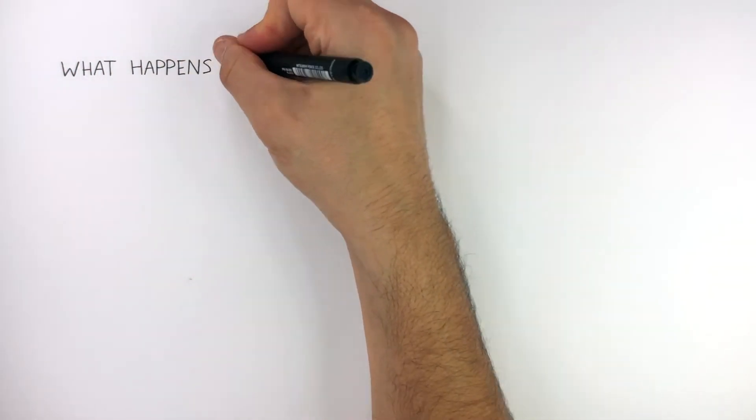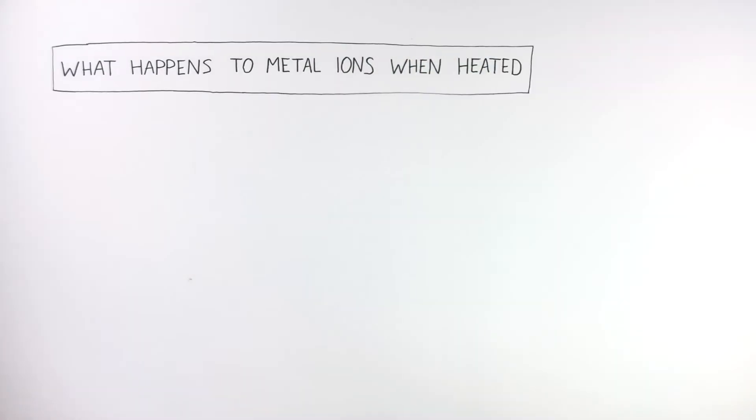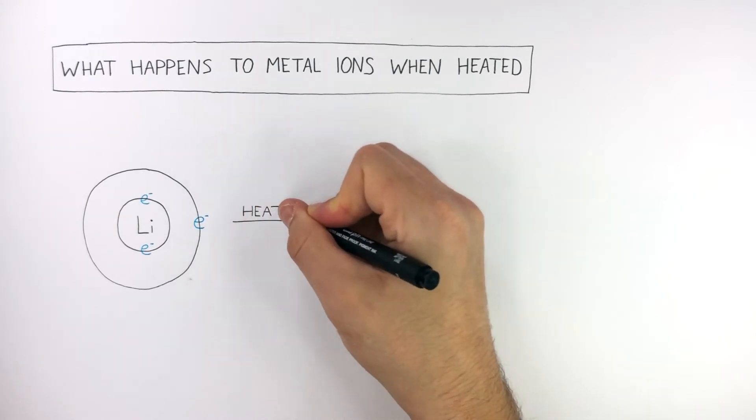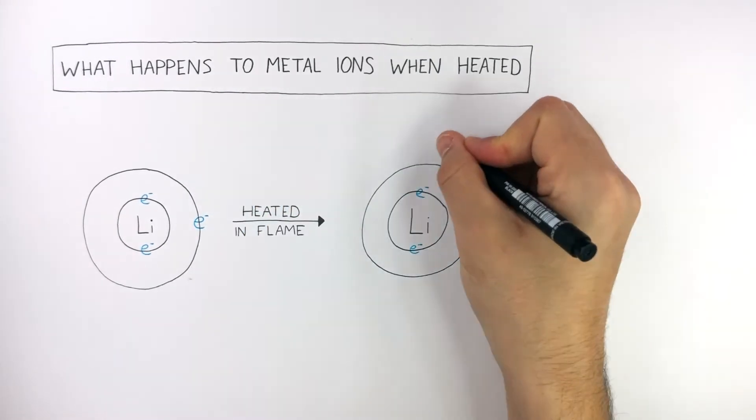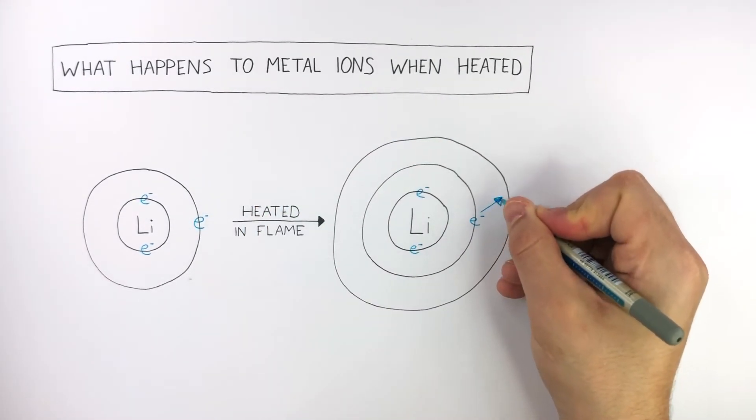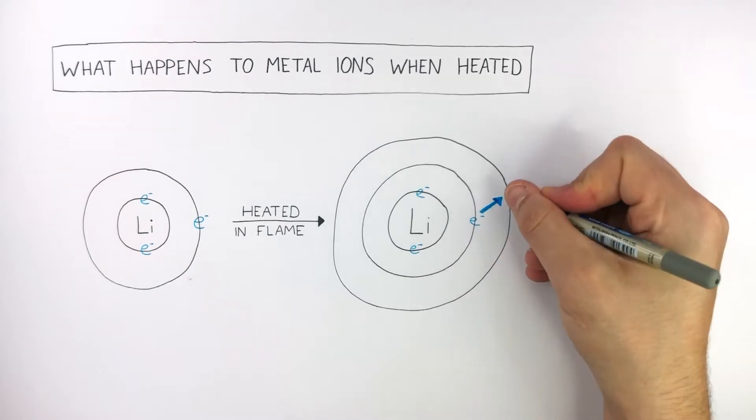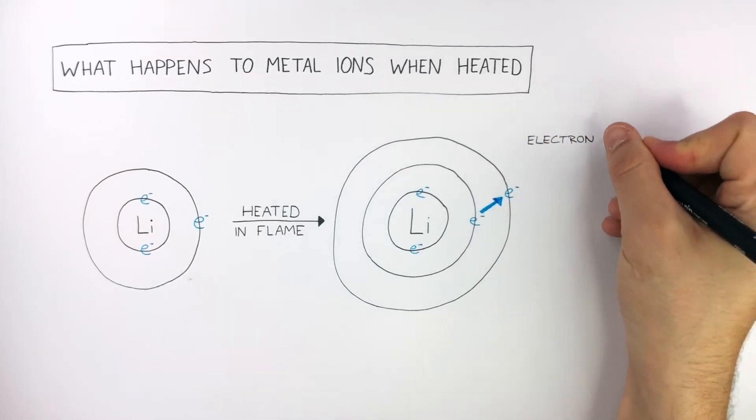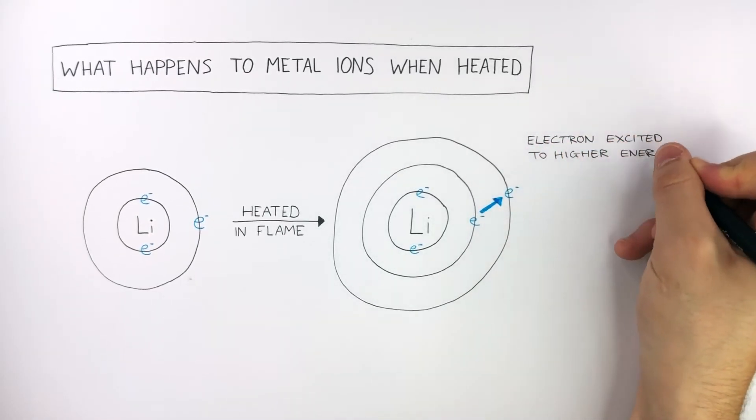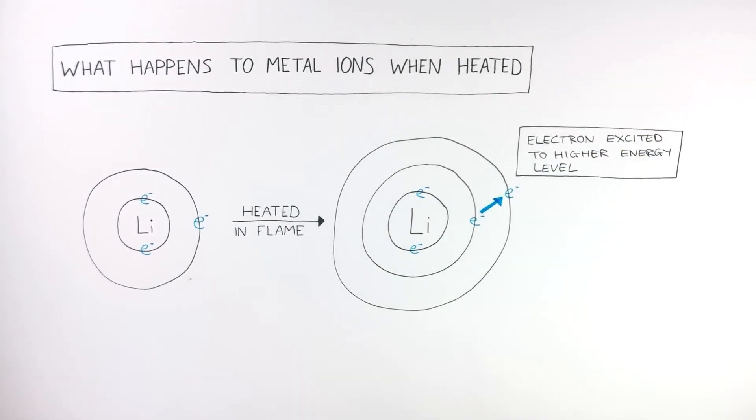What happens to the metal ions when heated? This shows the electronic configuration of lithium. When lithium is heated in a flame, the outer electron is excited to a higher energy level.